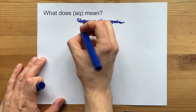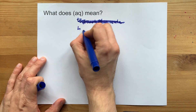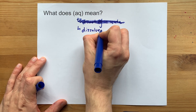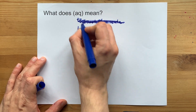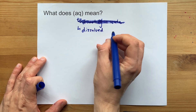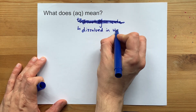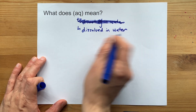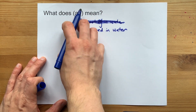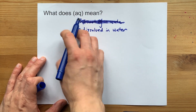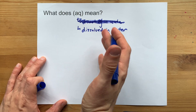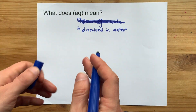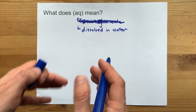What does AQ mean? The very short answer is it means that the thing it's written as a subscript on is dissolved in water. You can think about that as 'aqueous,' which comes from the Latin word for water — aqua.